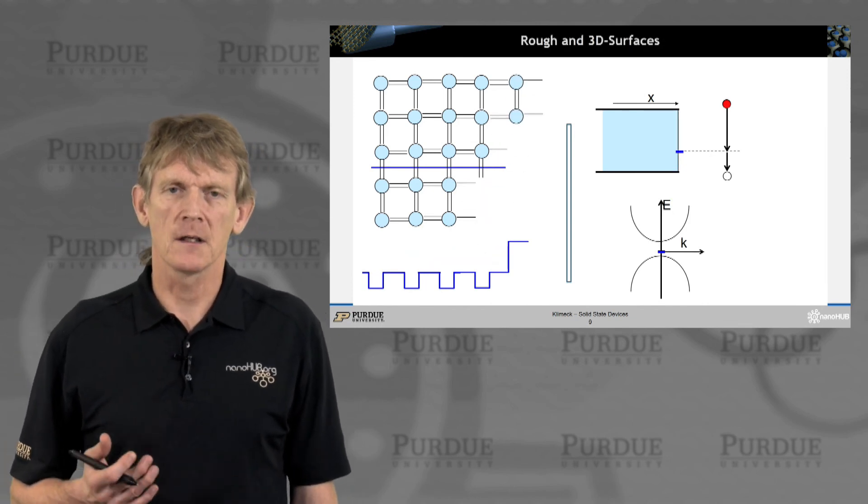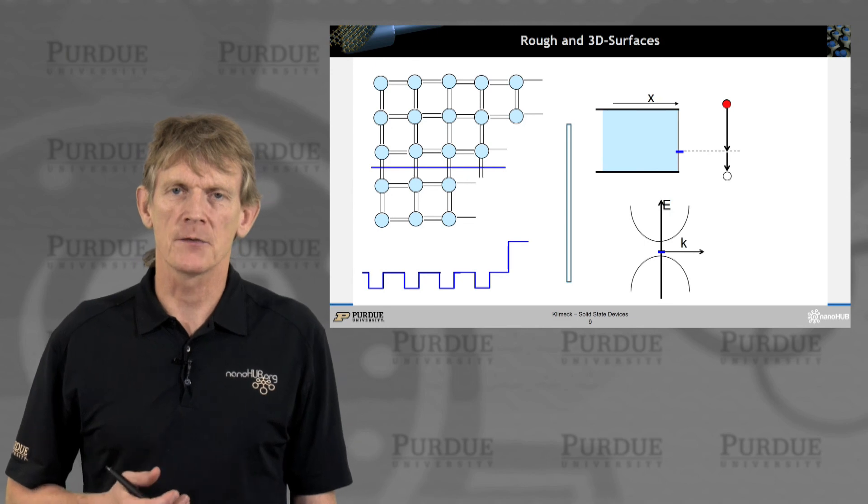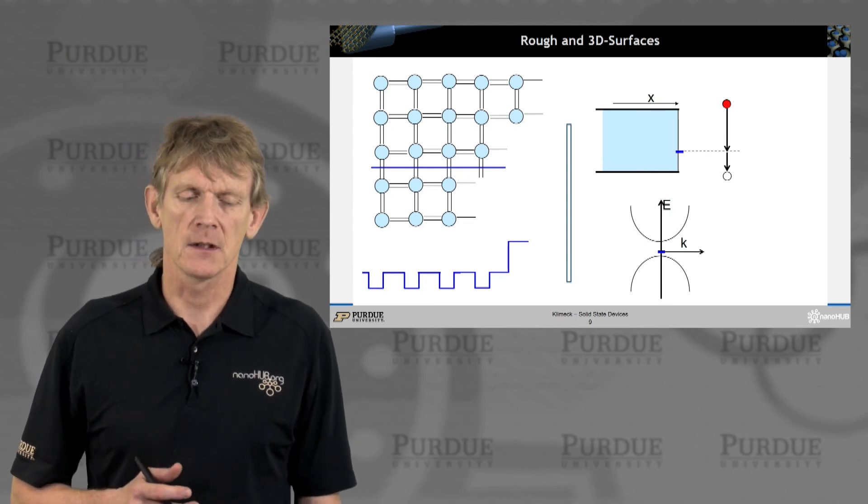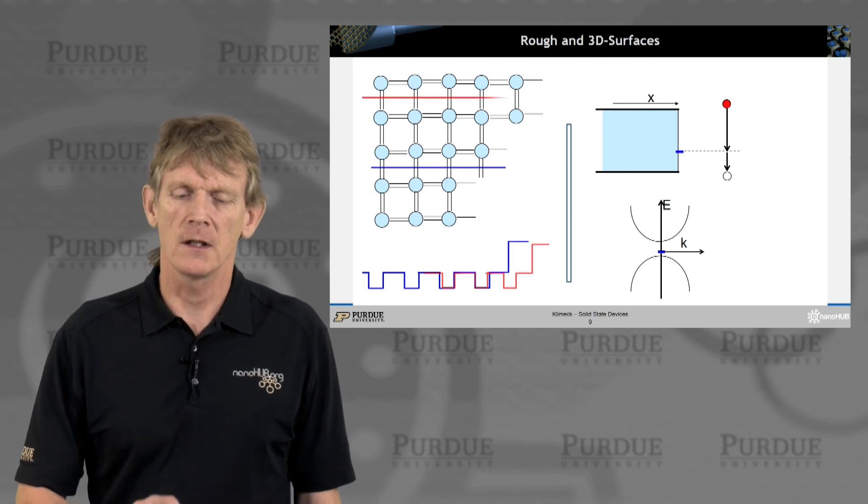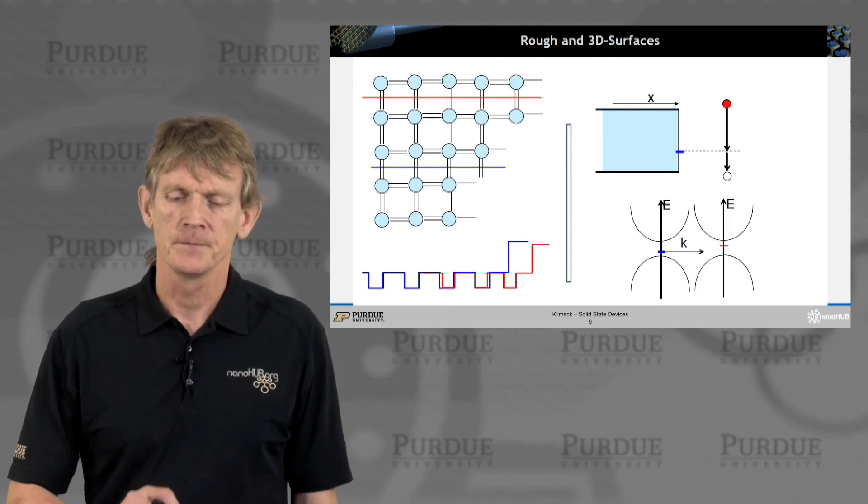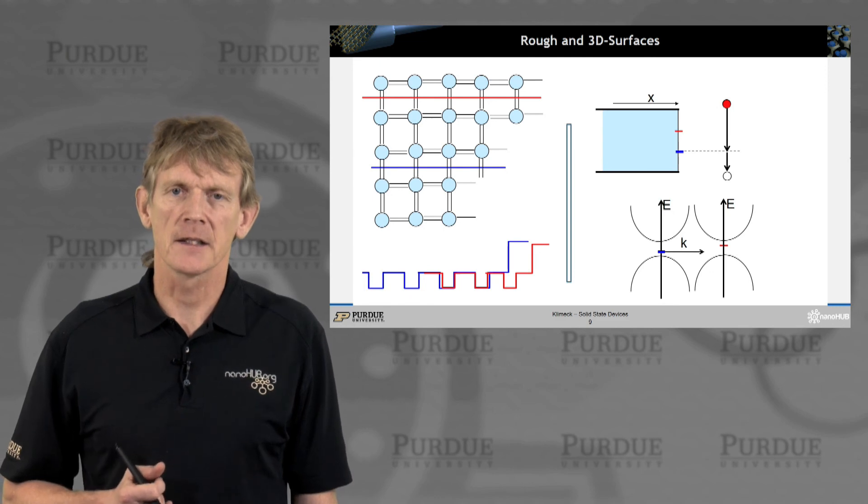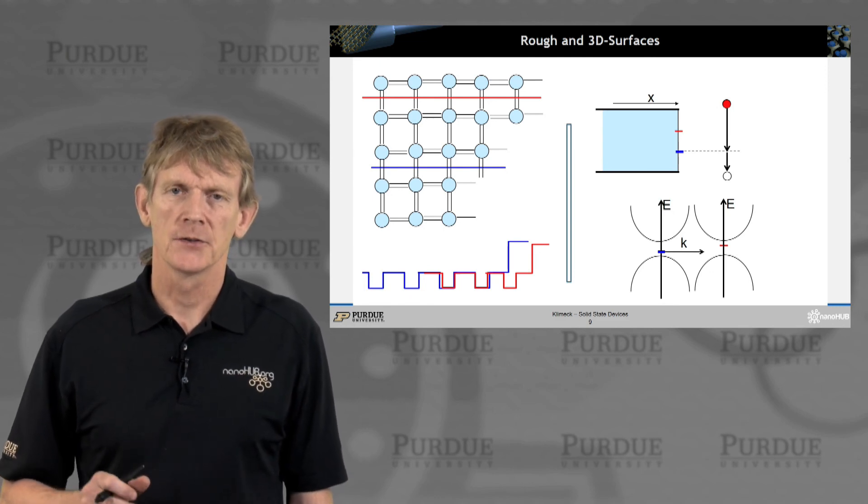You will have not perfect flat interfaces. There will be 3D shape, 2D shapes, different configuration of these bonds. You will have lots of these kind of traps that are sitting in the gap.